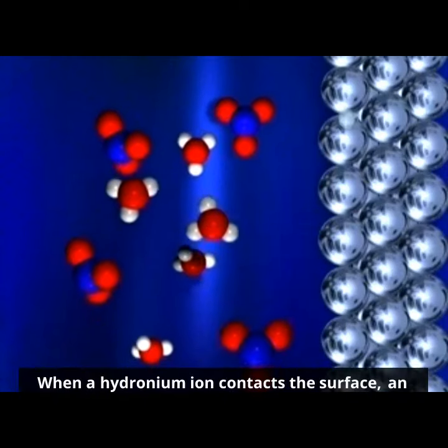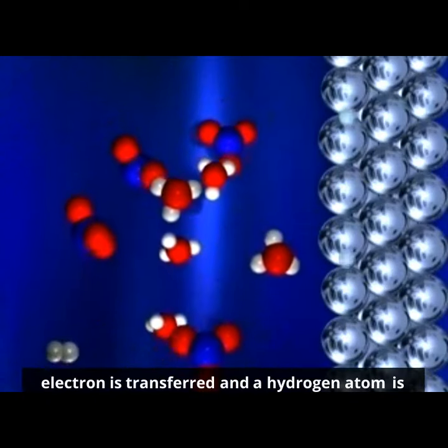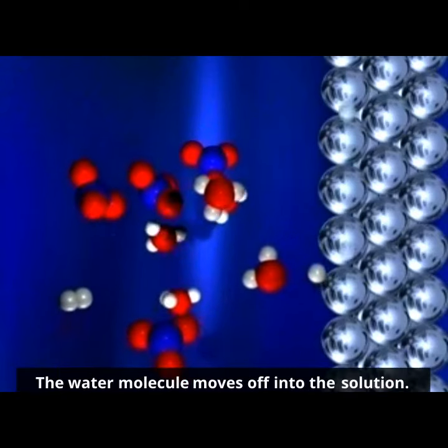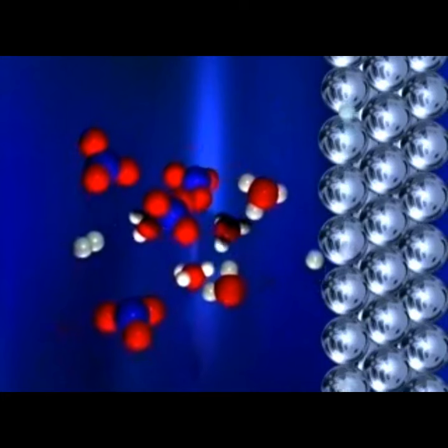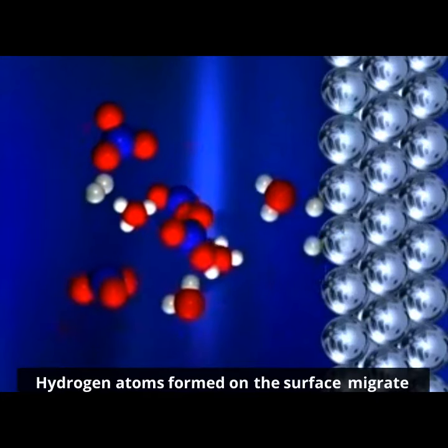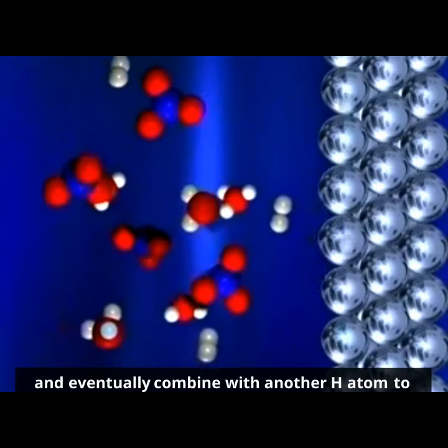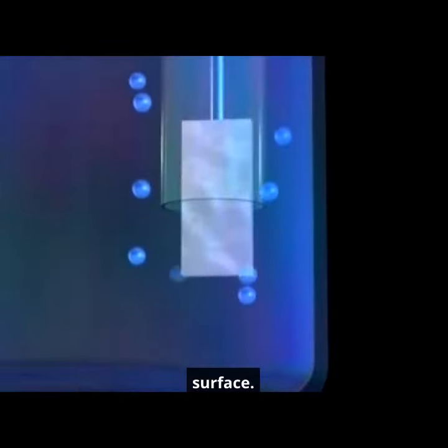When a hydronium ion contacts the surface, an electron is transferred and a hydrogen atom is formed. The water molecule moves off into the solution. Hydrogen atoms formed on the surface migrate and eventually combine with another H atom to form molecular hydrogen, which bubbles from the surface.